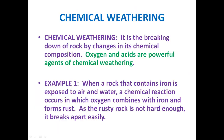The next type of weathering is chemical weathering. Chemical weathering is the breaking down of rock by changes in its chemical composition. When we studied physical weathering, it was the breaking down of rock due to physical changes. In chemical weathering, the weathering takes place due to changes in the chemical composition of the rock.